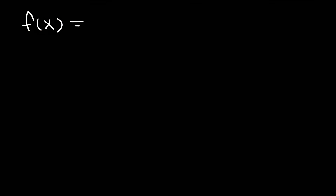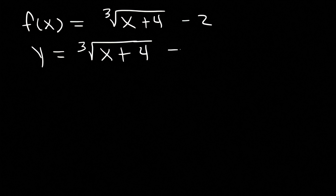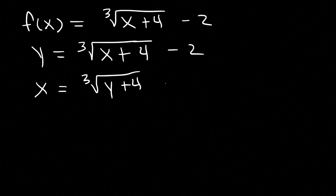Now let's look at another example. This time, we're going to deal with a cube root function. So let's say that f of x is the cube root of x plus 4 minus 2. Go ahead and work on this problem. So let's replace f of x with y, as we've been doing before. And then let's switch x with y. So we have x is equal to the cube root of y plus 4 minus 2. And now let's solve for y.